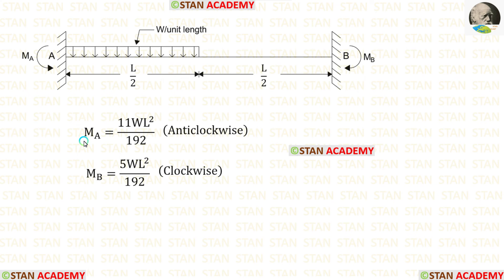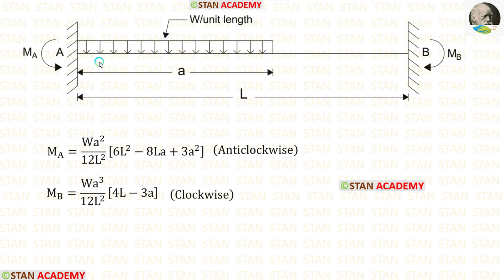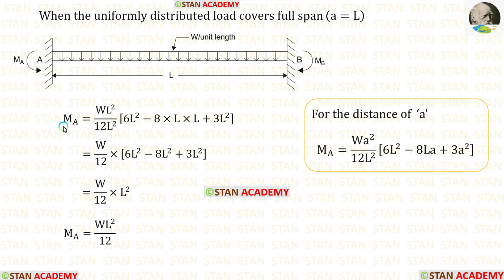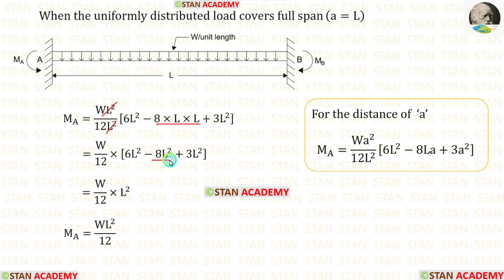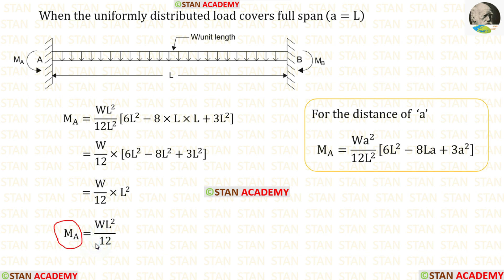We have found the formulas for the fixed end moments MA = 11WL²/192 and MB = 5WL²/192 for a fixed beam carrying UDL for half the span. Now we find the fixed end moments when UDL acts for the whole span by substituting L for A. For MA: L² cancels with L², and 8×L×L gives 8L². After adding the three values we get L², giving the formula MA = WL²/12.